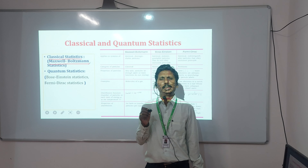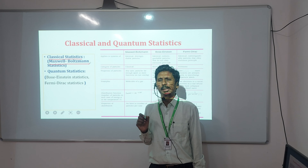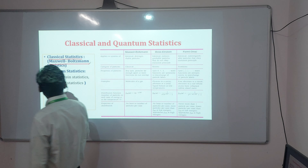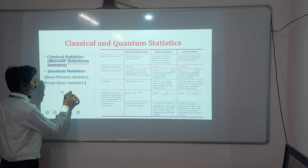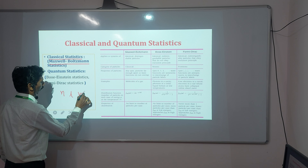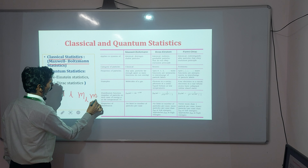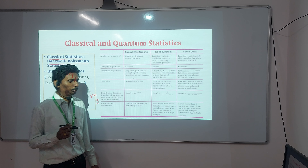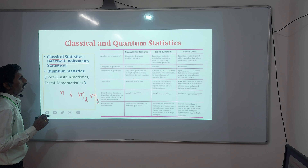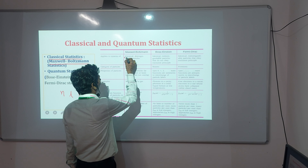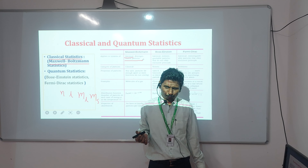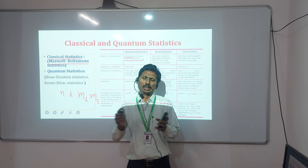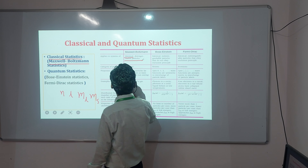In Maxwell-Boltzmann statistics, particles are not following the Pauli exclusion principle. In Maxwell-Boltzmann distribution law, particles are identical and distinguishable because they are widely distributed — there is a wide band of energy, and therefore they are distributed widely and are distinguishable.